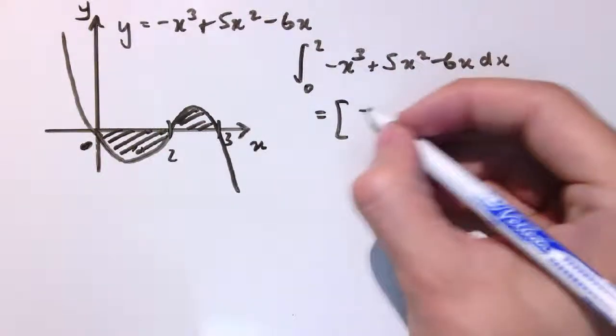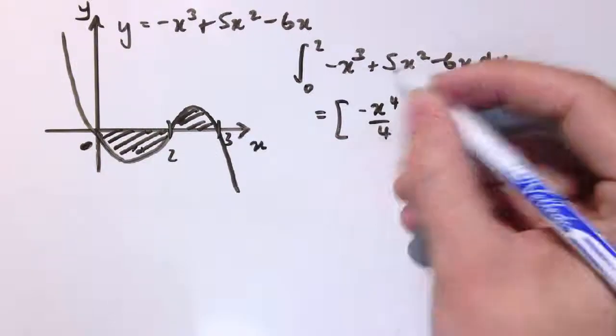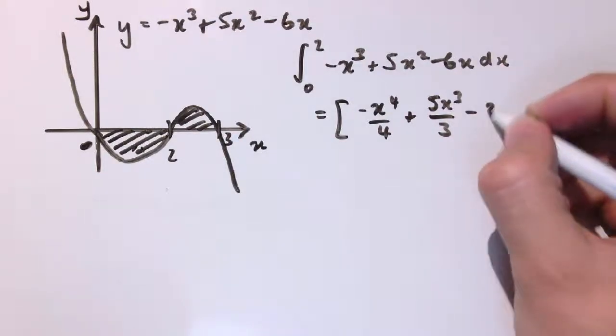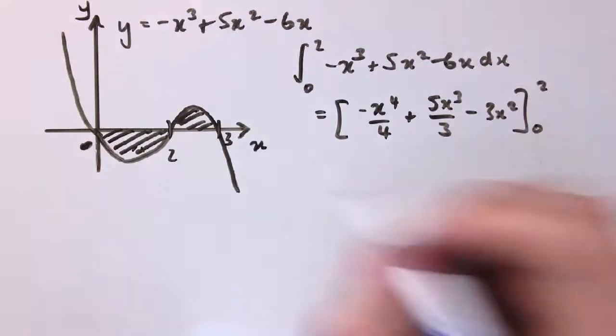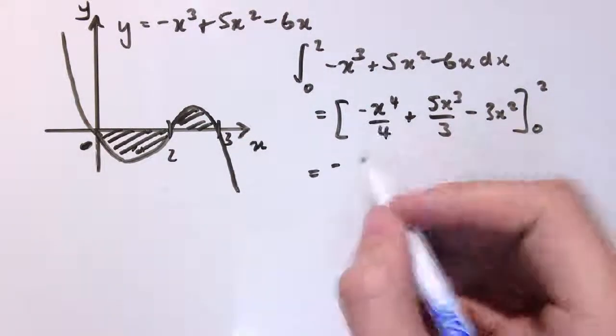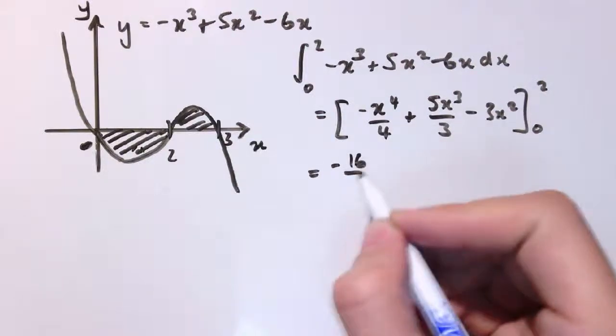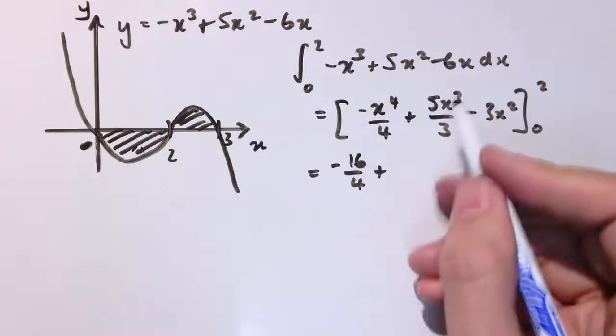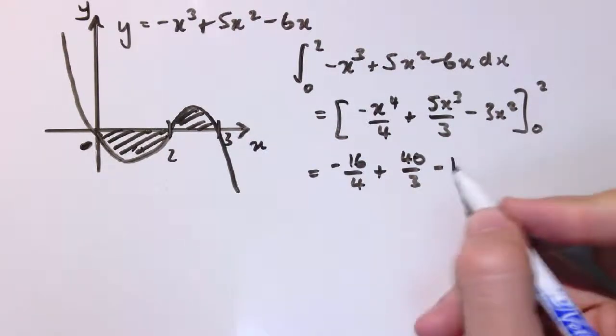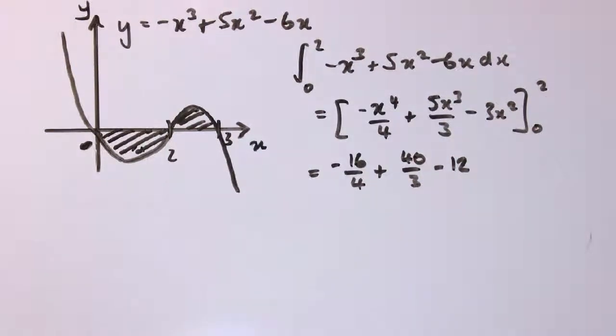So increase the power by 1, divide by the new power; increase the power by 1, divide by the new power; similarly keep going. So here we get -x⁴/4 + 5x³/3 - 3x² between 0 and 2. And now we've got a 0 here—that can often be quite nice because when I substitute in 0, I'm just going to get 0, so I don't really need to worry about this lower limit. So I just need to substitute in 2. So I get -2⁴, so that's -16/4, + 5×2³, that's 5×8 or 40/3, - 3×2², so that's -12, and that all works out to -8/3.